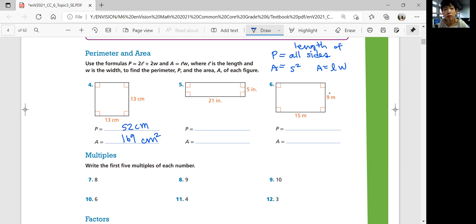21 inches for length, 5 inches for width. Perimeter: 21 times 2 plus 5 times 2 equals 52 inches. Area: 21 times 5 equals 105 square inches.